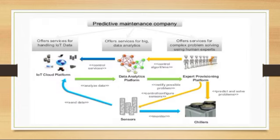A predictive maintenance company offers services for handling IoT data, offers services for big data analytics, and offers services for complex problem solving using human experts. Thus, based on the needs, the resources will be provided — that is called Elasticity.